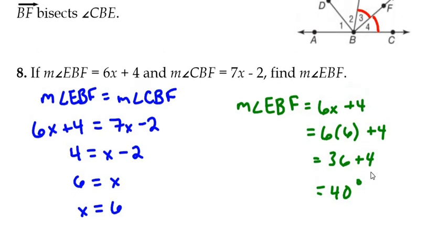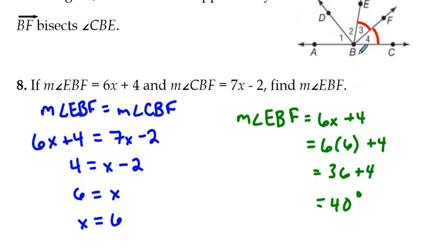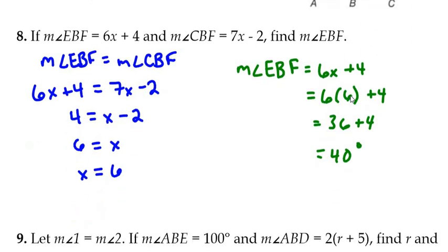Now, if the question asked to find the measure of angle EBC here, you would just simply find the measure of angle EBF or angle CBF and then double it to find the measure of angle CBE. That would be 80 degrees if we were asked to find it.